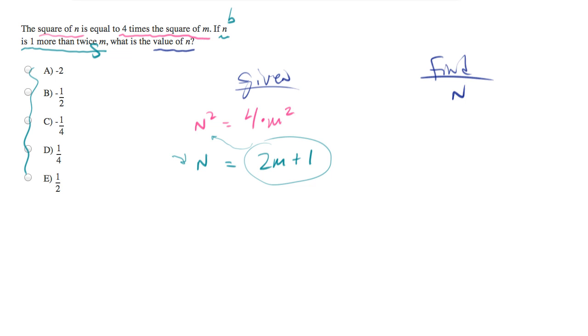And what we'll end up with is 2m plus 1, ugh, this is going to be so ugly, equals 4m squared. Well, we've got no choice. We're going to have to foil this out. So foiling is first, inside, outside, last.